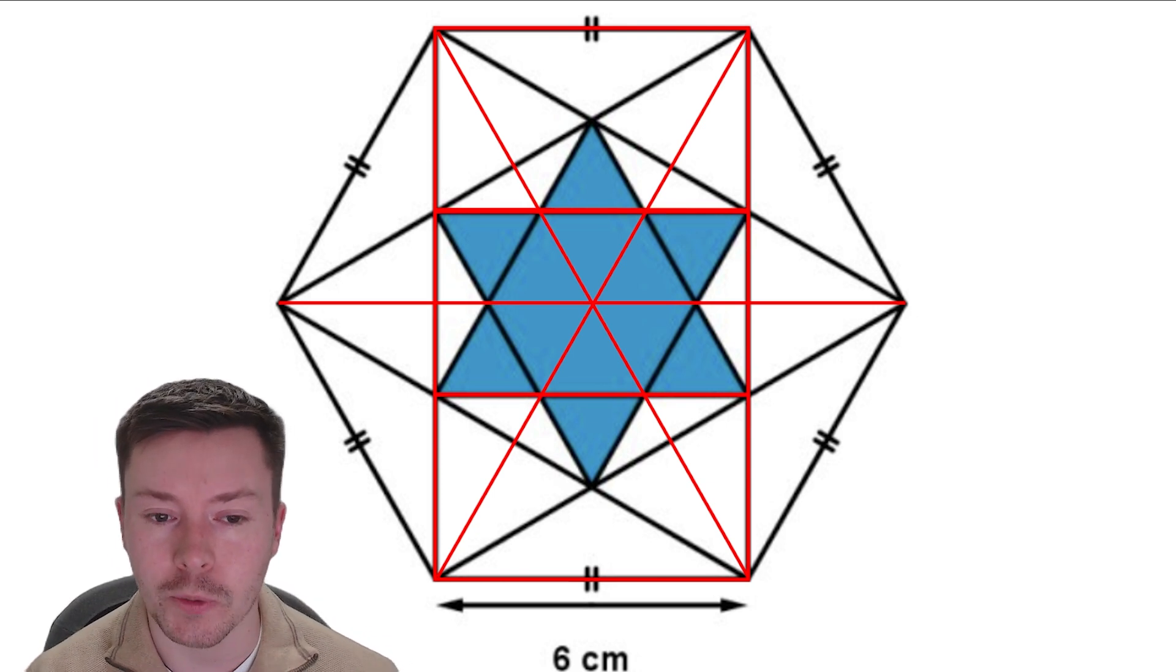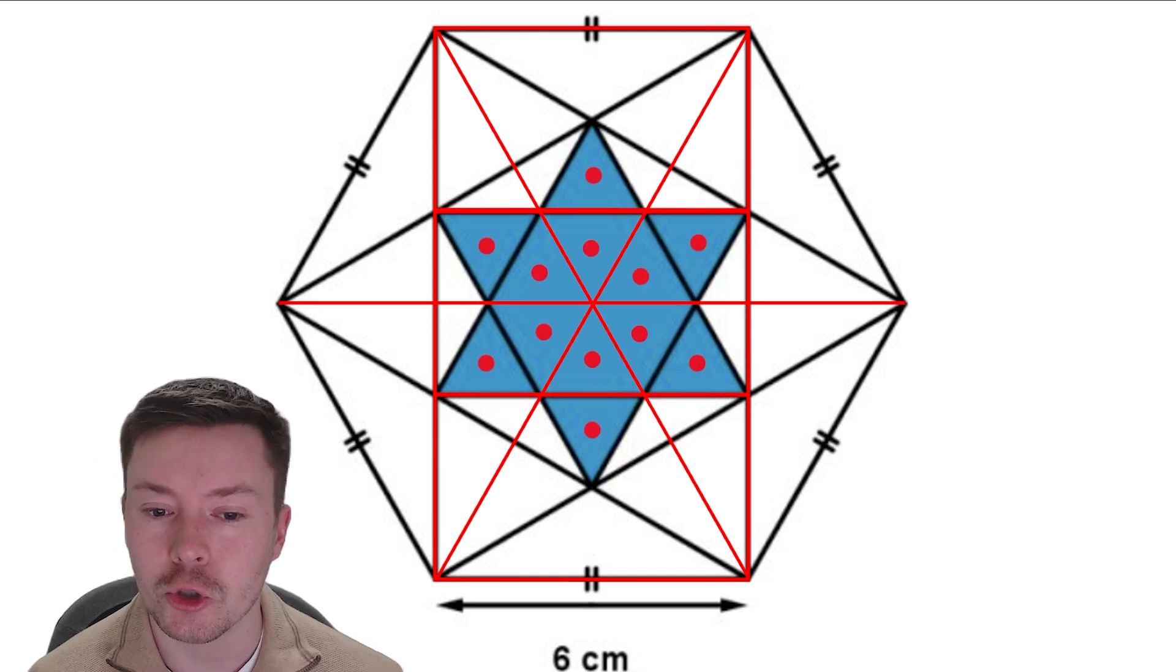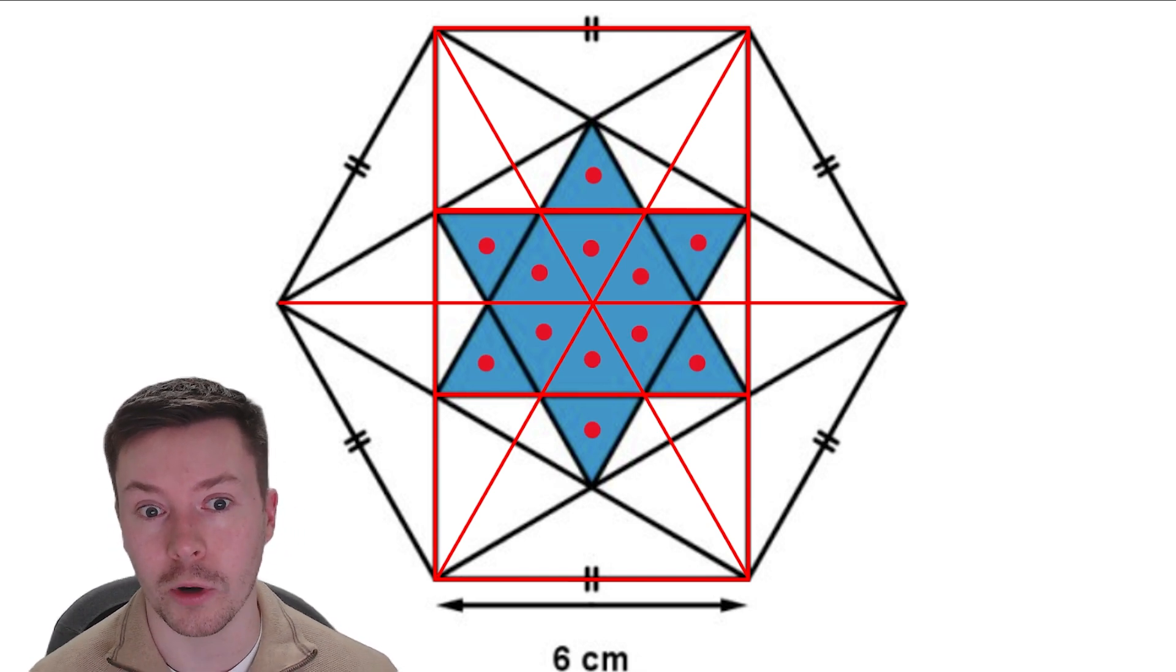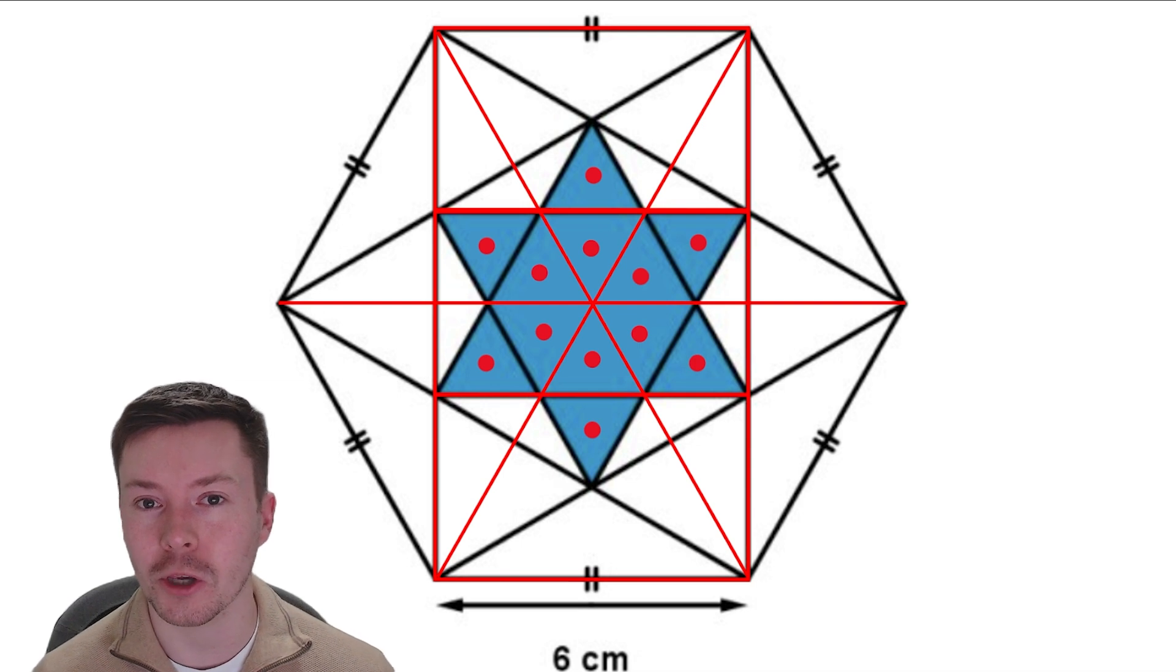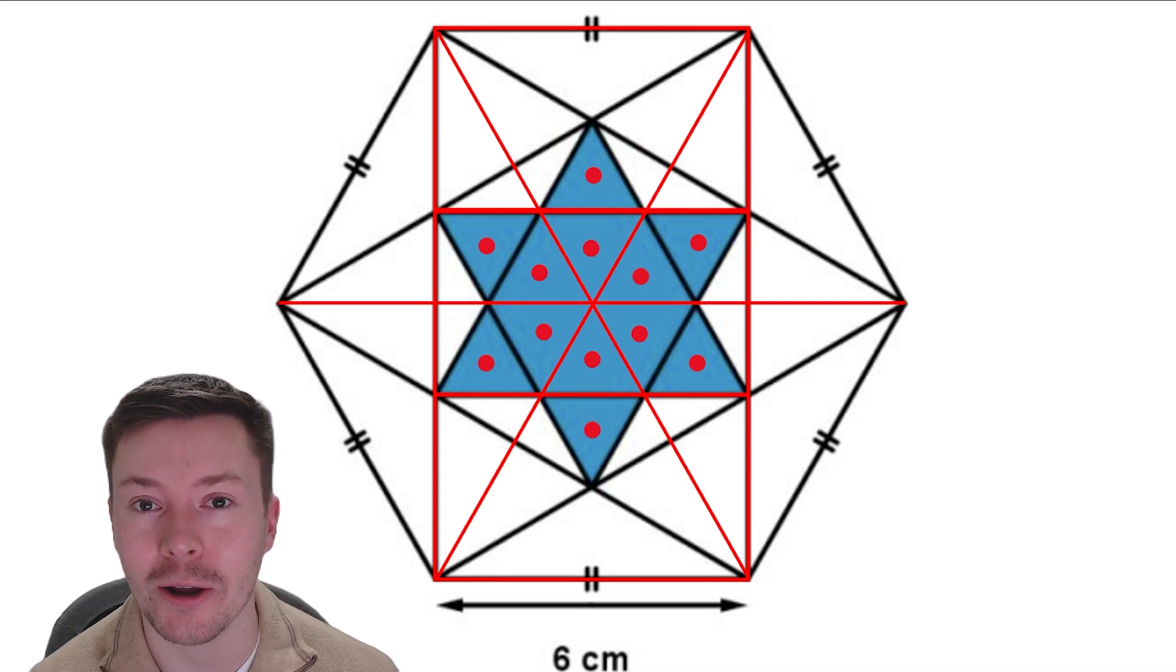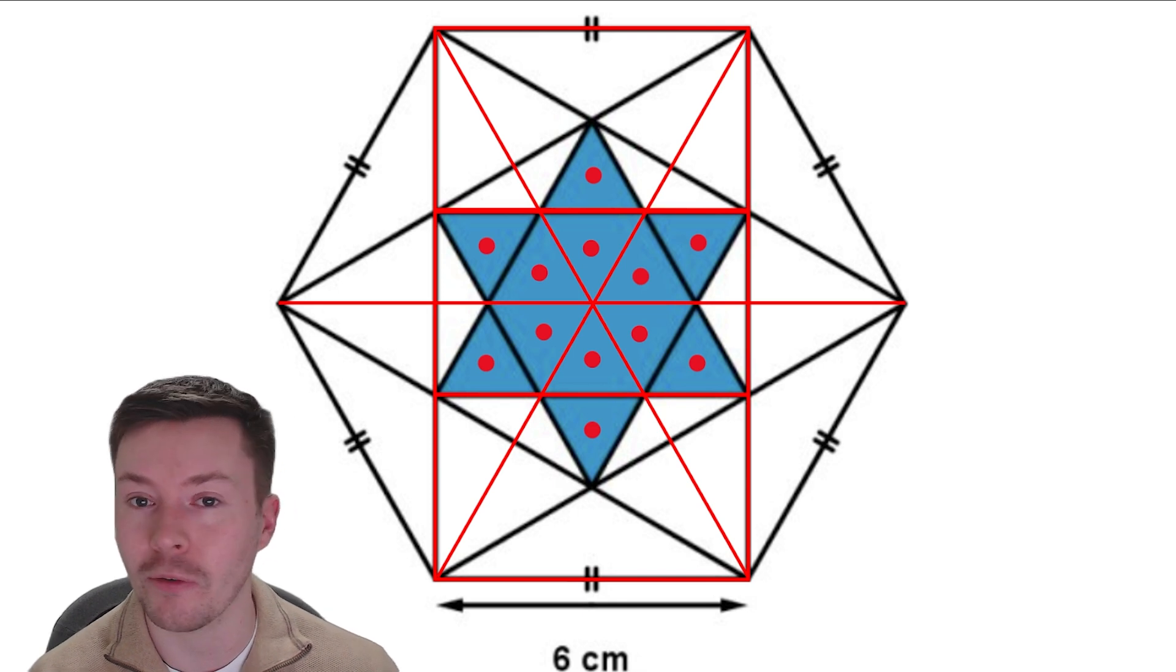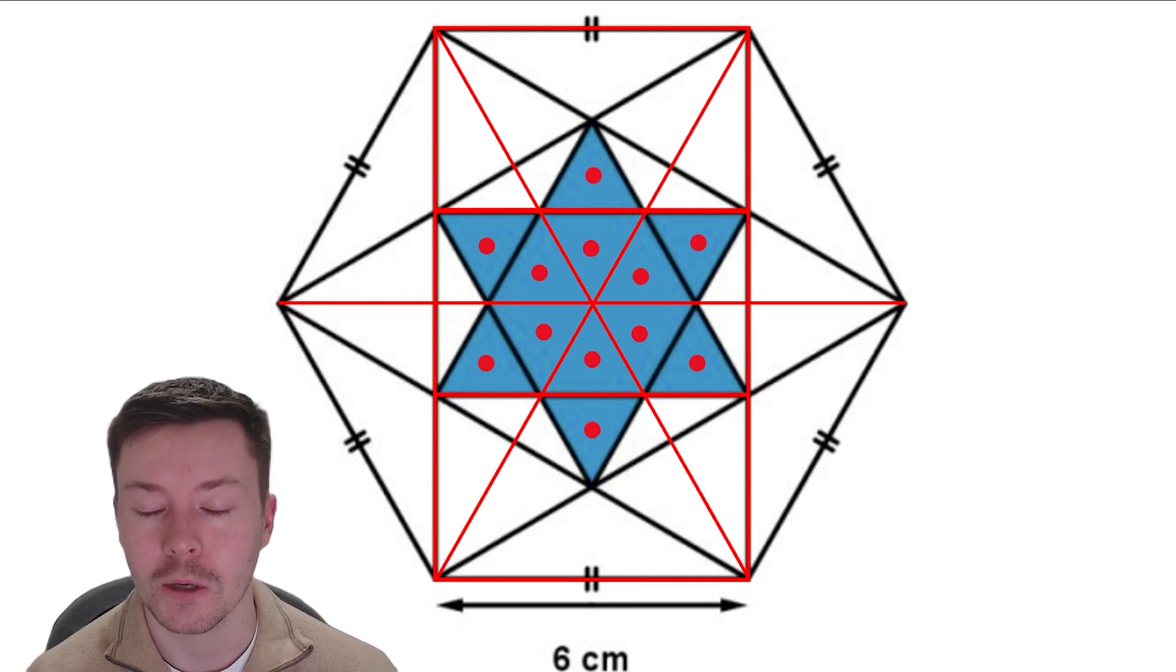Now what that means is because we can fold these rectangles on top of each other, these triangles that we've made are all equal and they're all equilateral triangles. So they will all have the same areas. Now that's important because what that means is we only need to work out the area of one of these blue triangles and just times it by however many we've got to get the full area of that star.